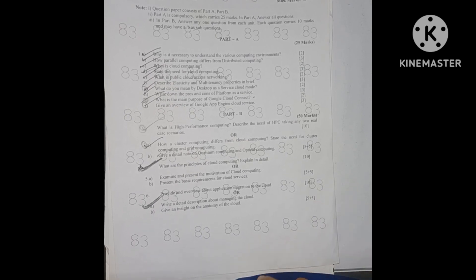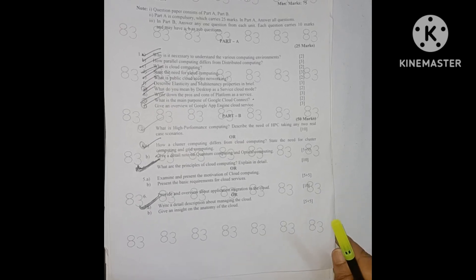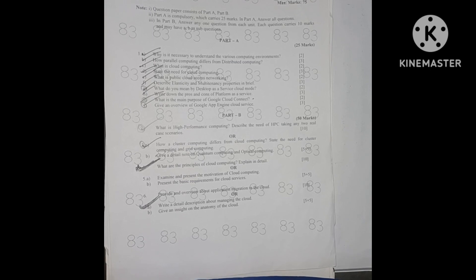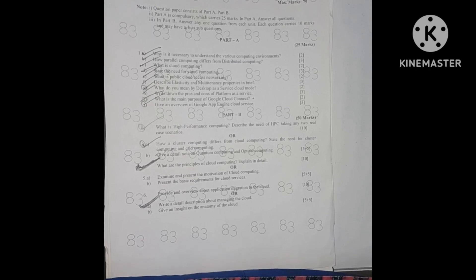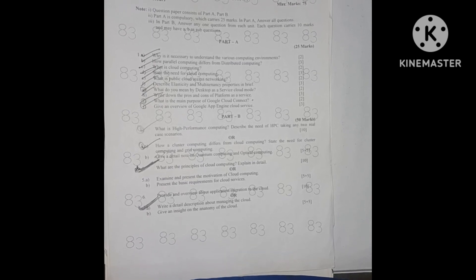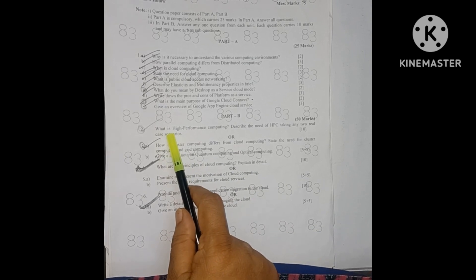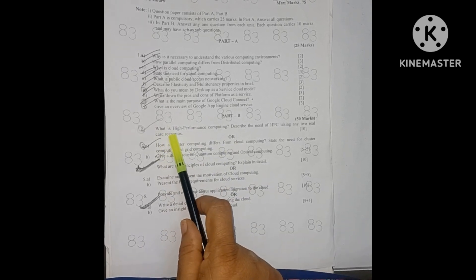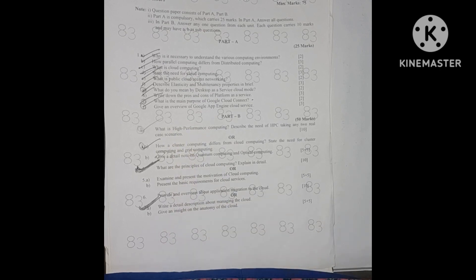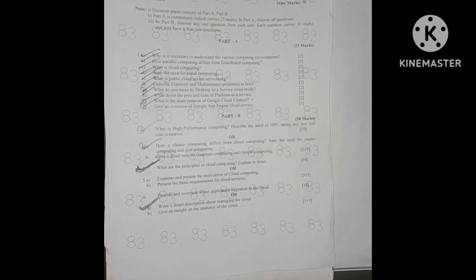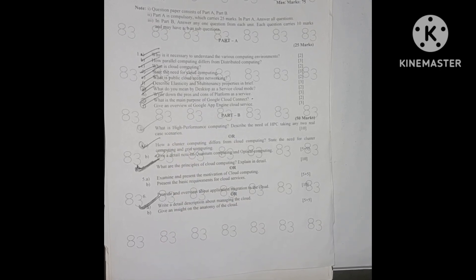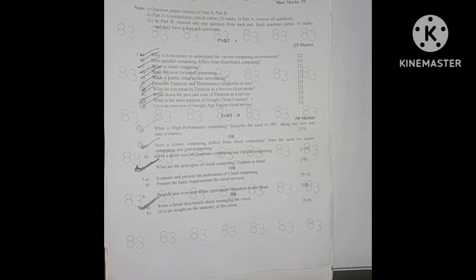Part B is essay type questions from unit wise. Each question carries 10 marks. All 5 units, 5 into 10 equals 50 marks. These are internal choice questions. Unit 1 question is what is high performance computing? Describe the need of HPC taking any 2 real case scenarios.